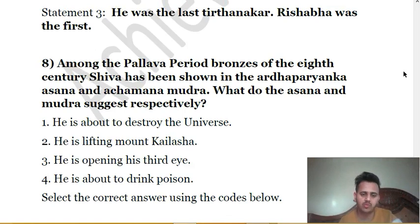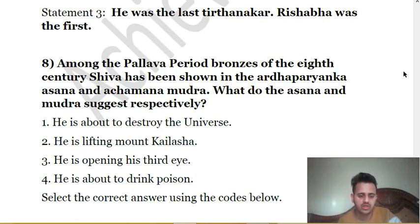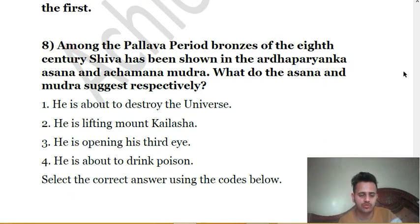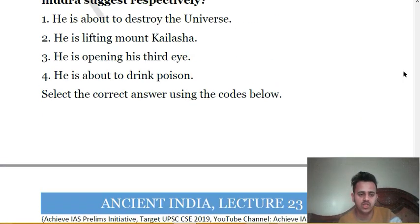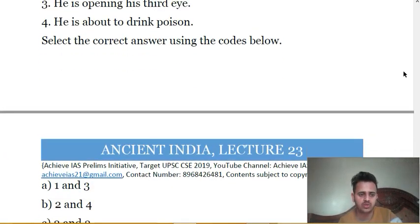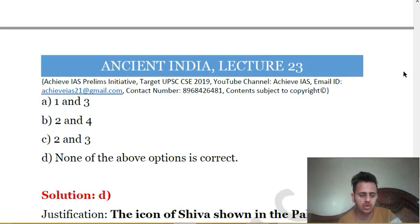Eighth question: among the Pallava period bronzes of the 8th century, Shiva has been shown in the Ardhanarisvara Asana and Achamana Mudra. What do the Asana and Mudra suggest respectively? Options include: he is about to destroy the universe; he is lifting Mount Kailash; he is opening his third eye; he is about to drink poison. The Ardha Priyanka Asana with Achamana Mudra shows that Shiva was about to drink poison. Only the fourth option is correct, but no option shows it singularly — it appears only in combination. So the answer is D, none of the above options is correct as stated.